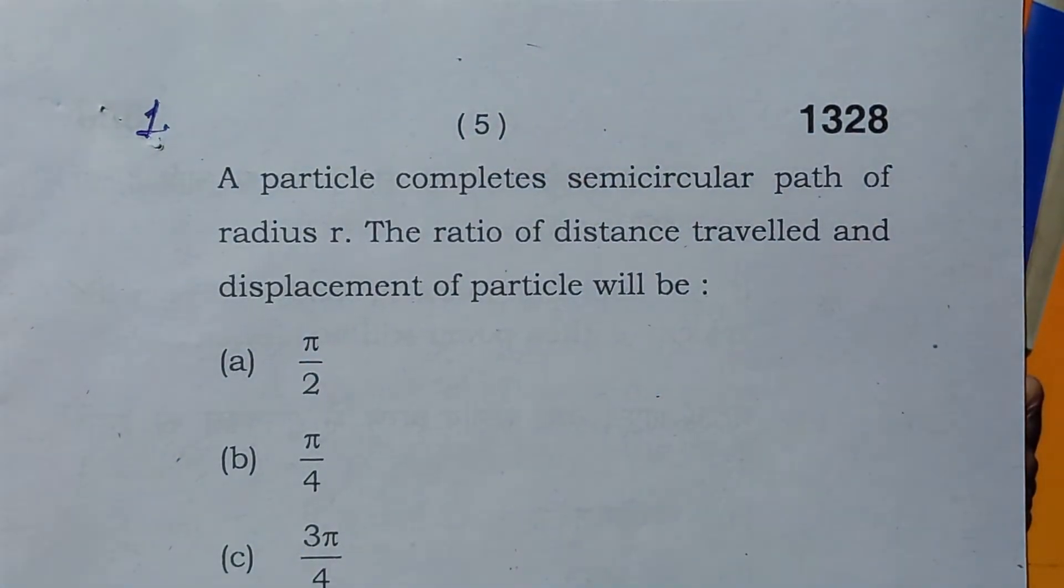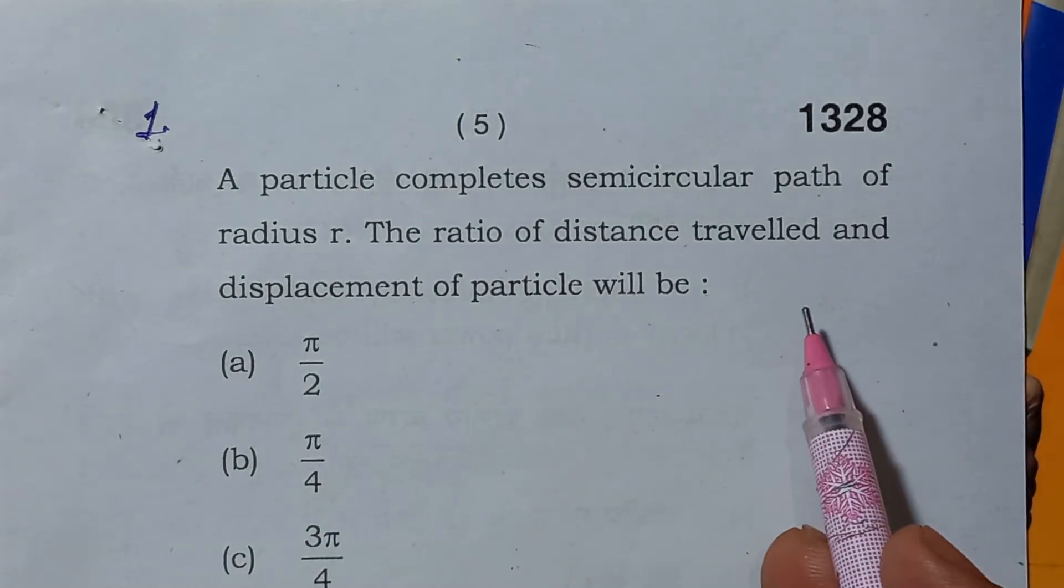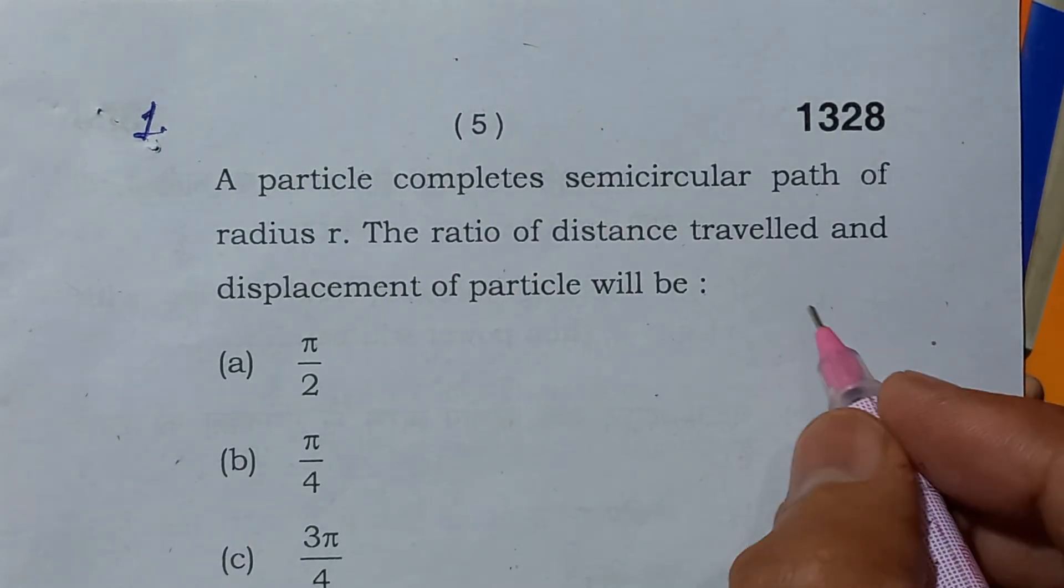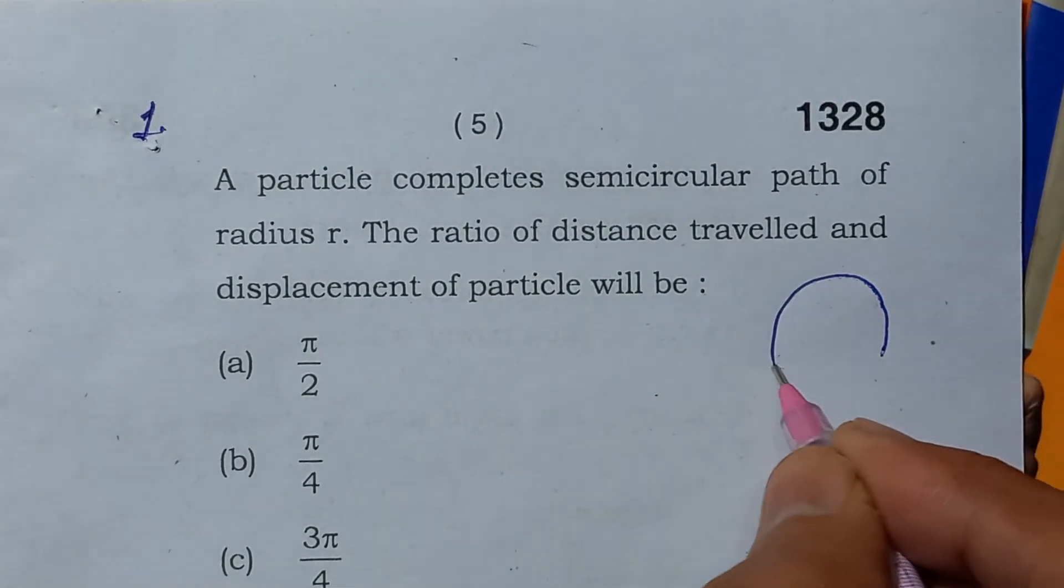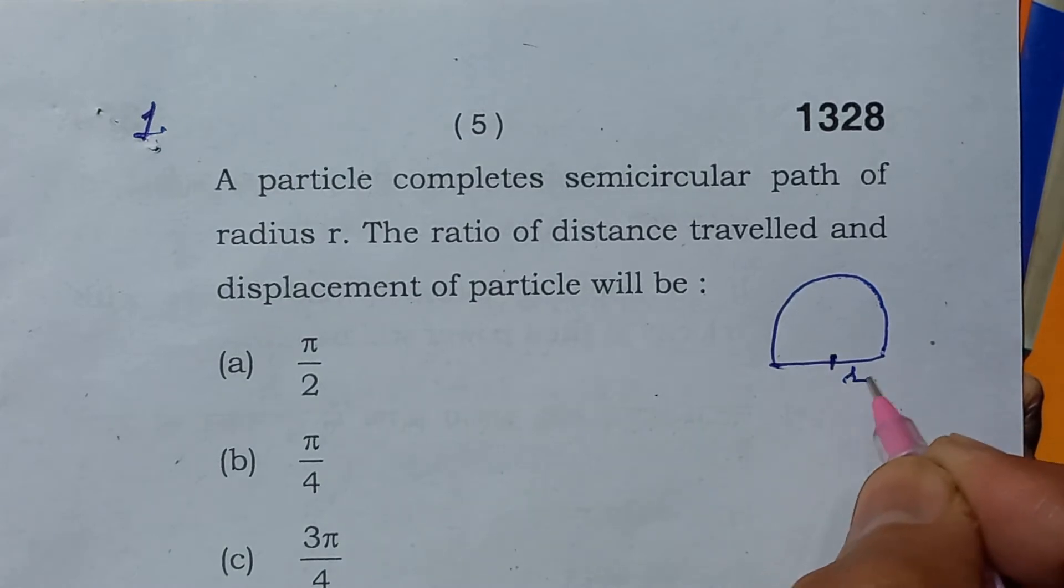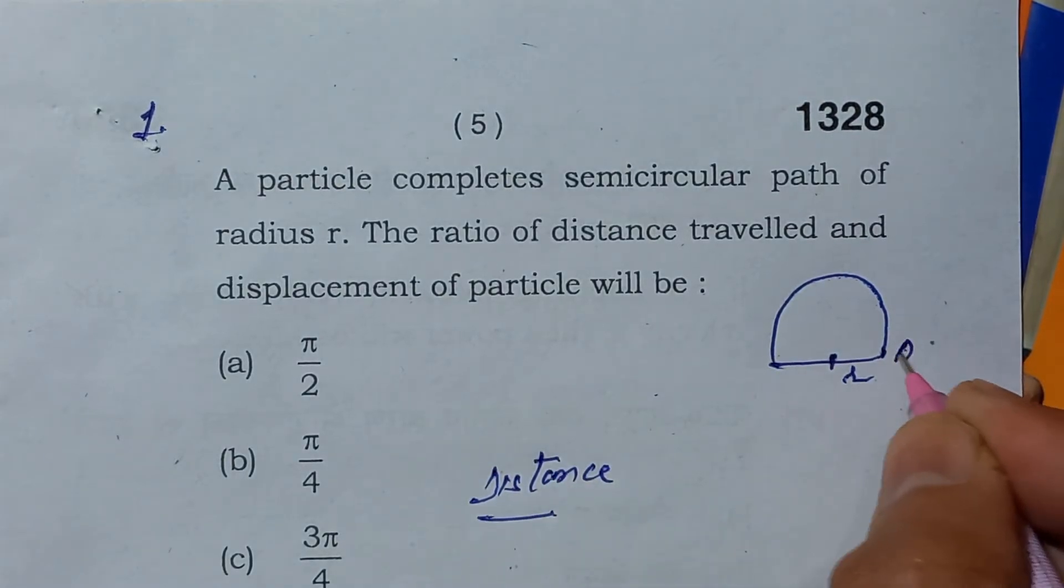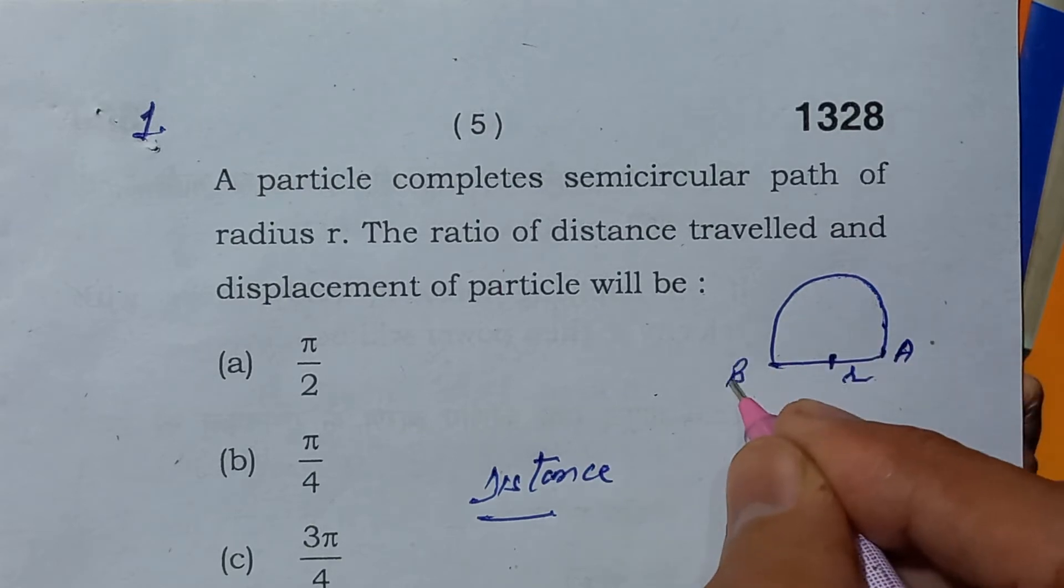A particle completes a semicircular path of radius r. The ratio of distance traveled and displacement of particle will be. We know that in a semicircular path, let r be the radius. We know that distance is the actual path traveled, that is from A to B.